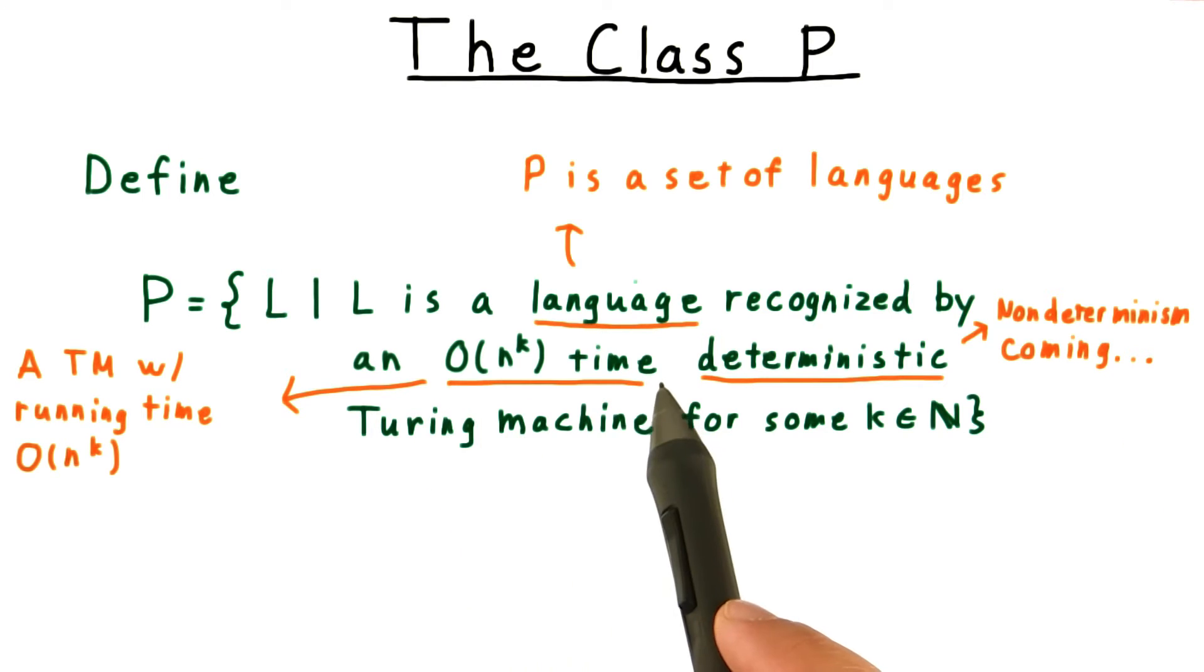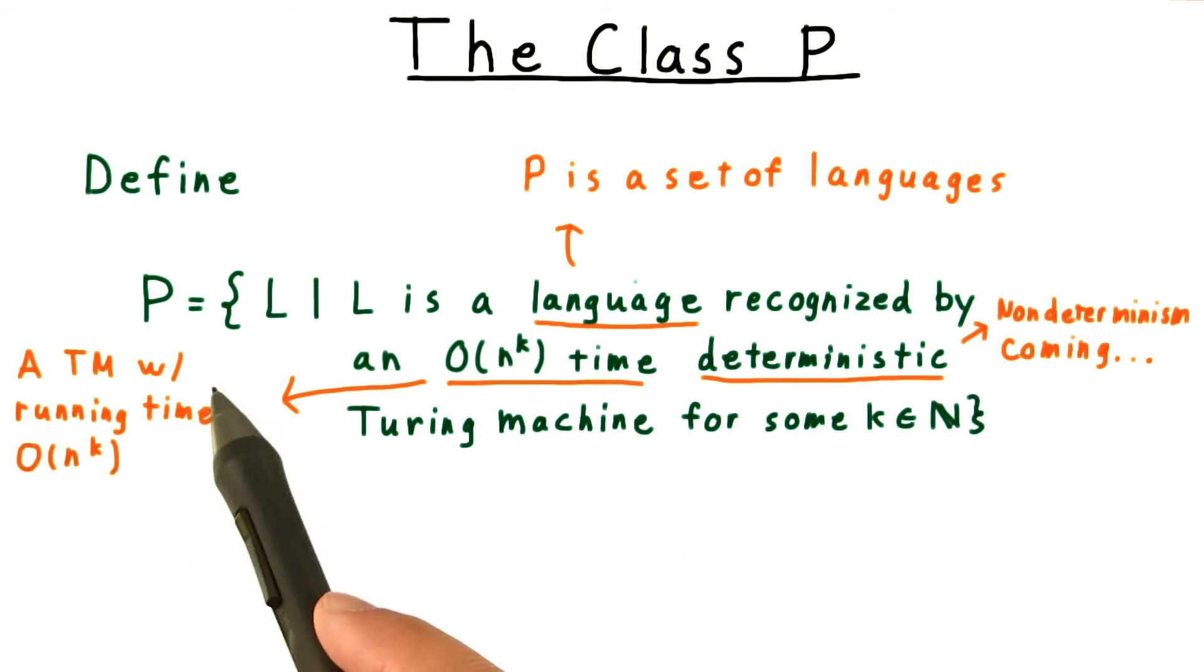By an O(n^k) time Turing machine here, I mean a Turing machine with running time O(n^k), as we defined the terms a minute ago.